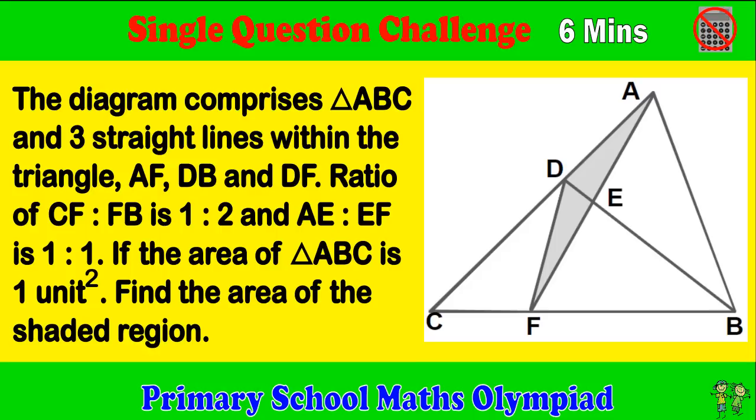The diagram comprises triangle ABC and 3 straight lines within the triangle: AF, DB and DF. Ratio of CF to FB is 1 to 2 and AE to EF is 1 to 1. If the area of triangle ABC is 1 unit square, find the area of the shaded region.